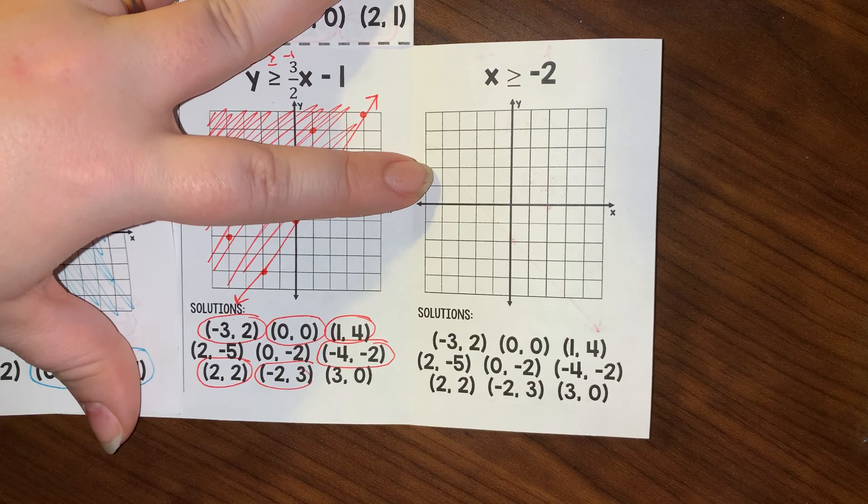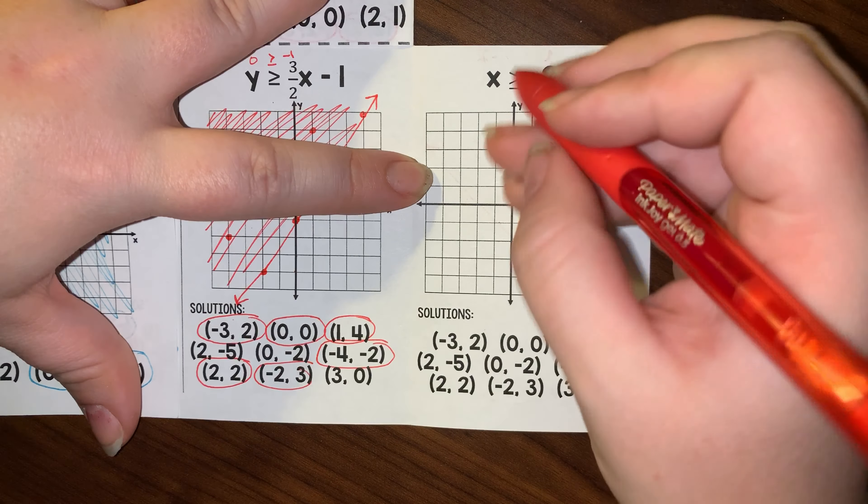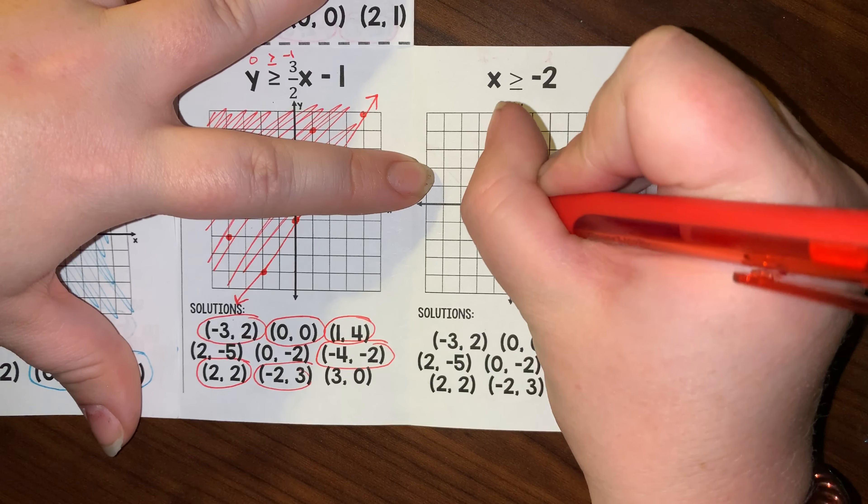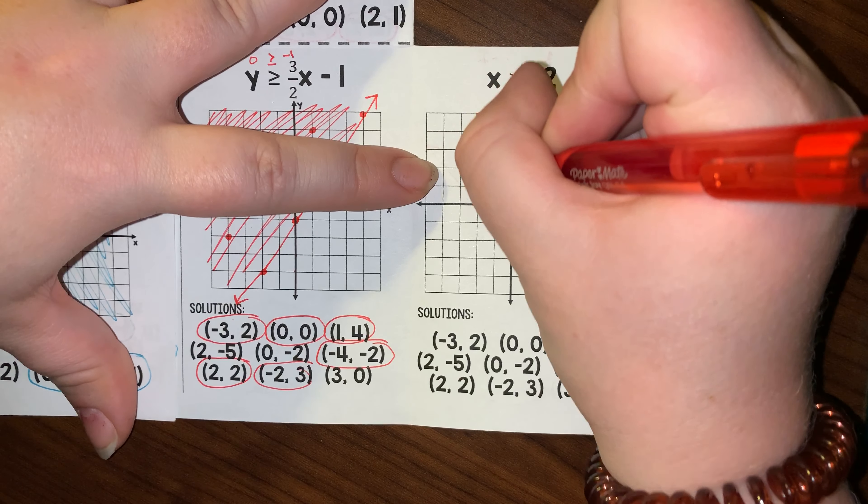Over here, I have x is greater than or equal to negative 2. So what this means is I find negative 2 on my x-axis, I put a point there, and because it could equal this, it is a solid line.